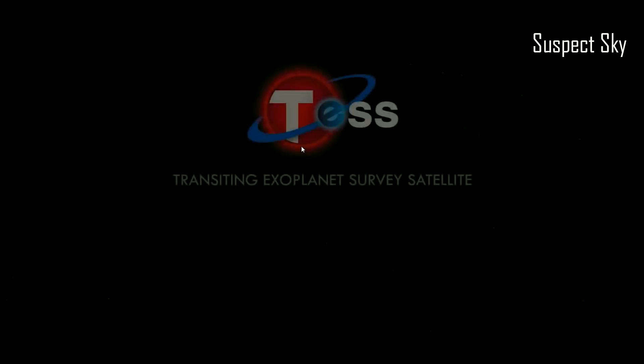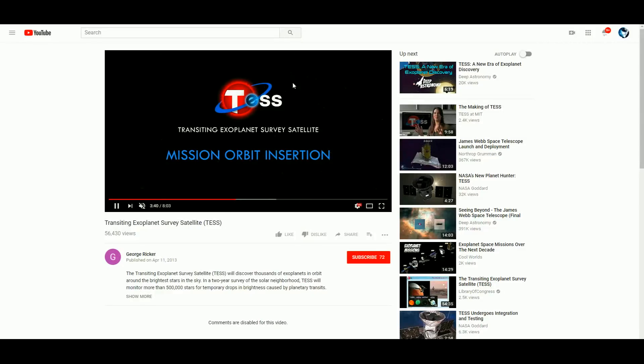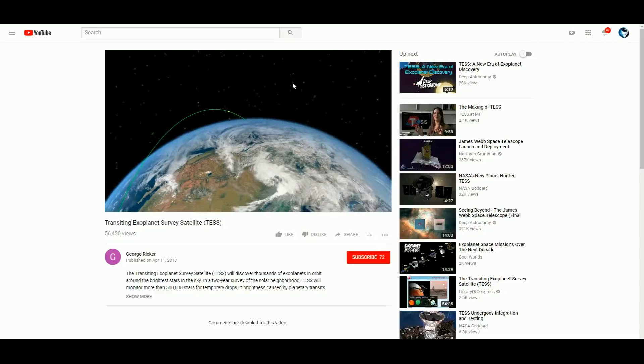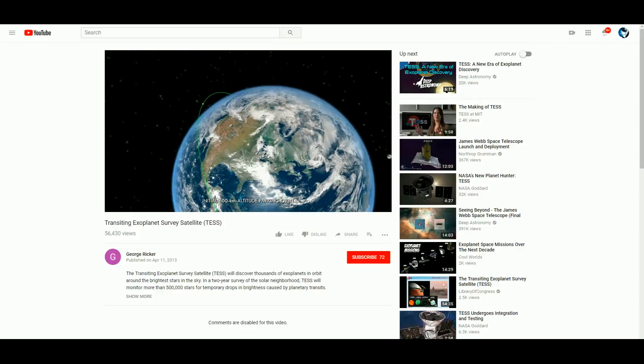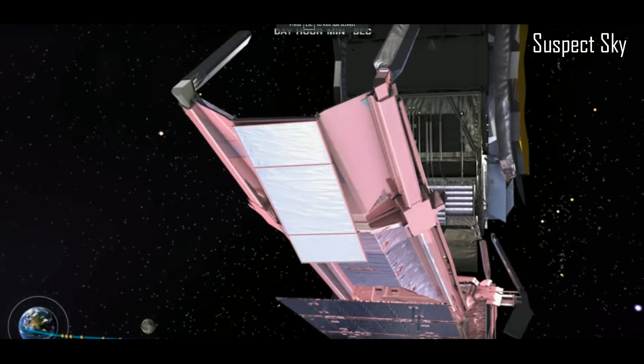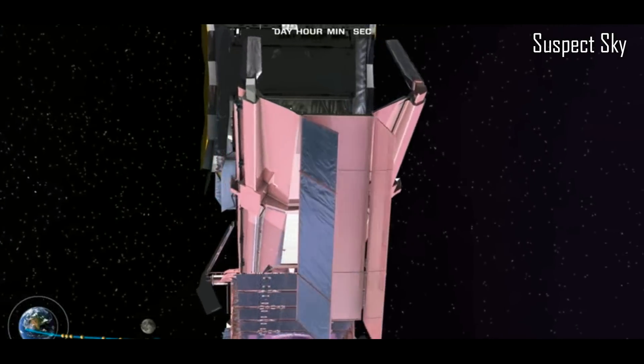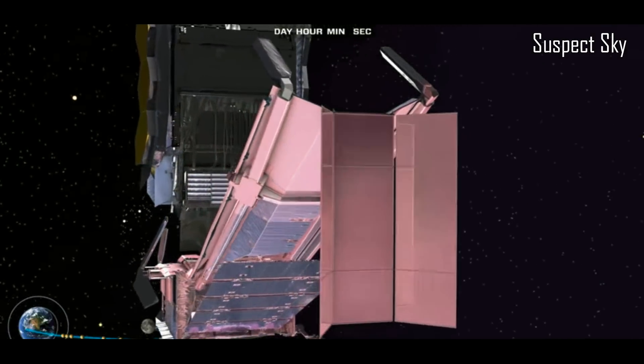This satellite is going to be able to detect planets that are smaller than Neptune. This is very exciting, and that's particularly exciting because life as we know it requires a much lower gravity than a planet such as Jupiter. But all this is going to be paled in comparison to the James Webb Telescope, which is scheduled to launch in 2020.